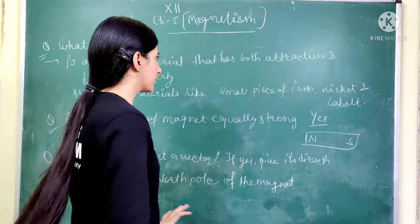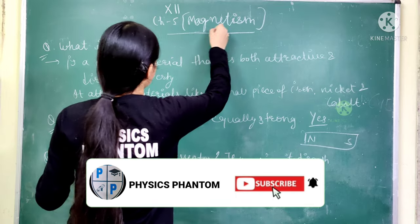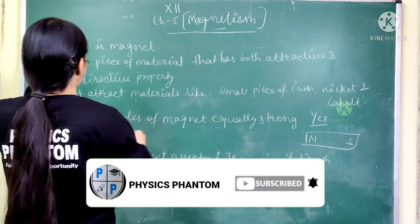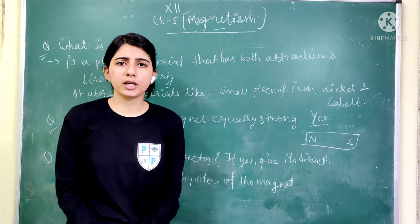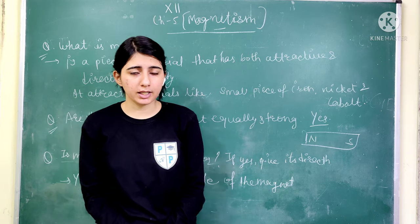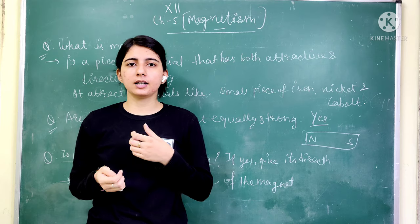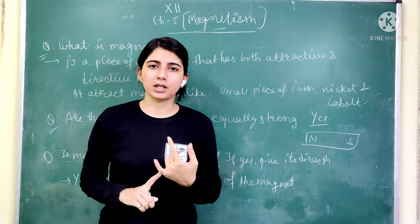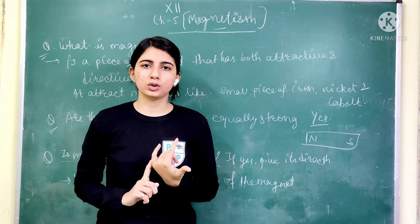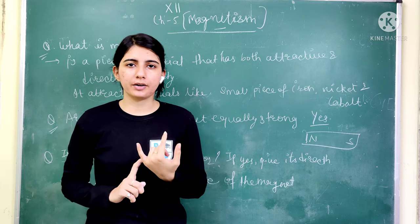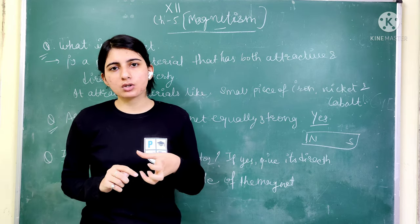Now the first question is: what is a Magnet? Obviously magnetism is the chapter, so first of all you should know what a magnet is. So what is a magnet? There is a piece of material. There are two important properties — the first is Attractive, and the second is Directive. You cannot call every piece of material a magnet.